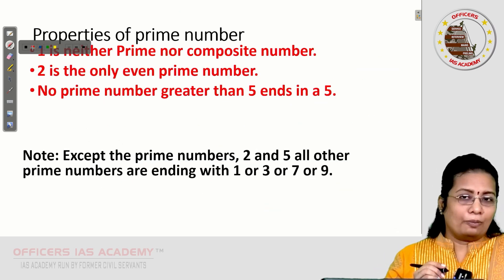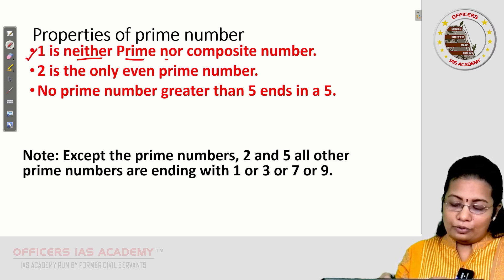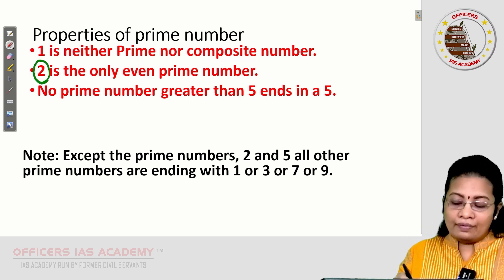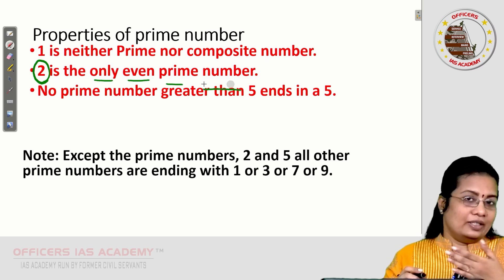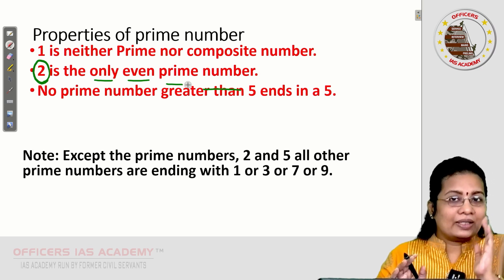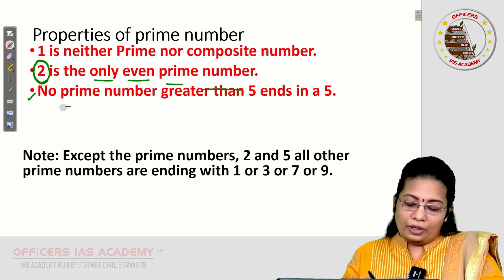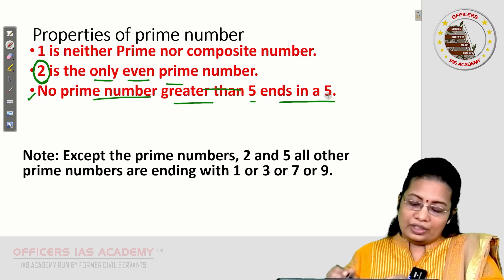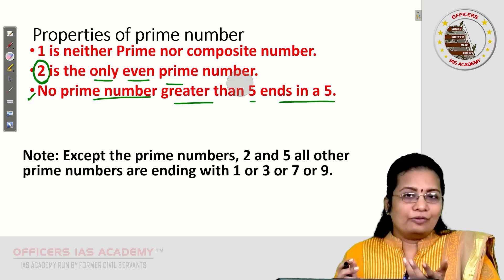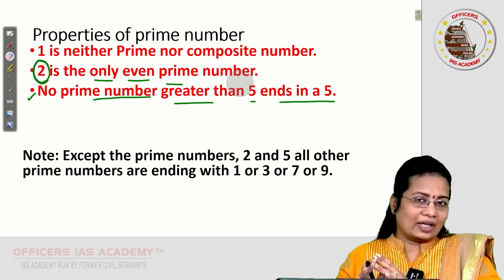Let's see some important properties of prime numbers. Point 1: 1 is neither prime nor composite. Point 2: 2 is the only even prime number — after 2, no even number is prime. Point 3: No prime number greater than 5 ends in 5. Only 5 itself ends in 5; numbers like 15, 25, 35 are not prime.